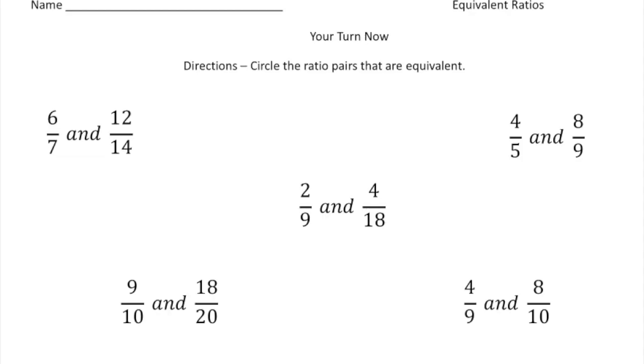Welcome back. So for this problem, you had to circle all the pairs of equivalent fractions. So remember, there's two different ways. You can do the cross product way or see if the numerator and denominator were multiplied by the same factor. So for the first one, I know that six times two is twelve and seven times two is fourteen. So both the six and seven are multiplied by a common factor of two. So that means that these ratios are equivalent.